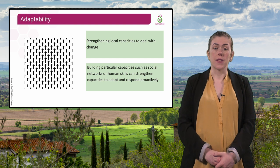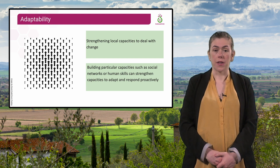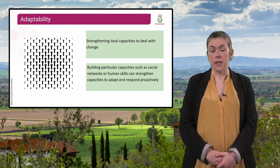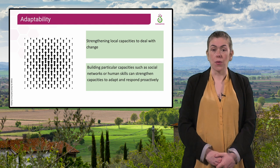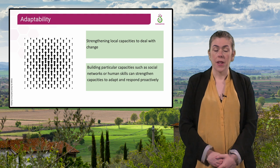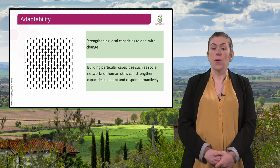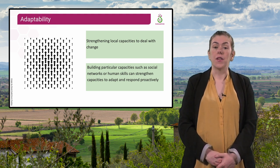Finally, principle number six is adaptability. This relates to strengthening local capacities to adapt and respond. This could be through building particular capacities such as stronger networks in a rural community or building people's skills and knowledge. Local capacities to adapt and respond proactively to change are viewed as crucial for regeneration.